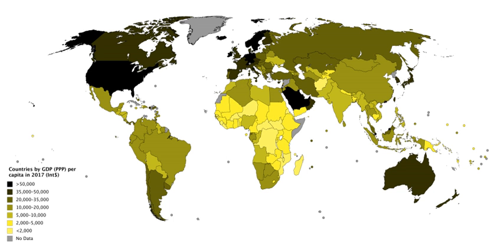GDP per capita is often used as an indicator of living standards. The major advantage of GDP per capita as an indicator of standard of living is that it is measured frequently, widely, and consistently. It is measured frequently in that most countries provide information on GDP on a quarterly basis, allowing trends to be seen quickly. It is measured widely in that some measure of GDP is available for almost every country in the world. It is measured consistently in that the technical definition of GDP is relatively consistent among countries.